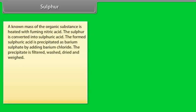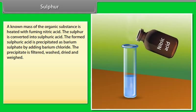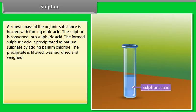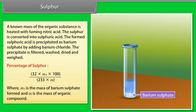Sulfur: a known mass of organic substance is heated with fuming nitric acid. The sulfur is converted to sulfuric acid. The formed sulfuric acid is precipitated as barium sulphate by adding barium chloride. The precipitate is filtered, washed, dried, and weighed. Percentage of sulfur = (32 × M₁ × 100) ÷ (233 × M), where M₁ is the mass of barium sulphate formed and M is the mass of the organic compound.